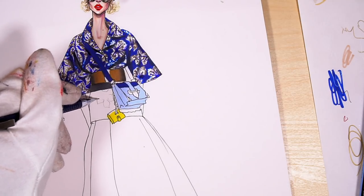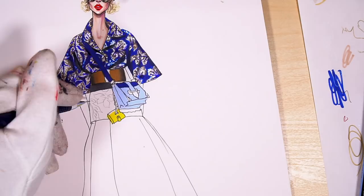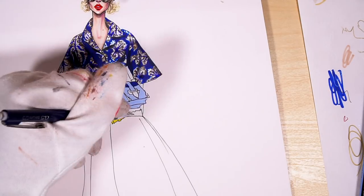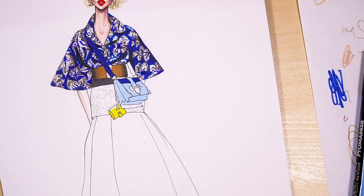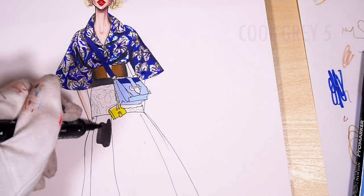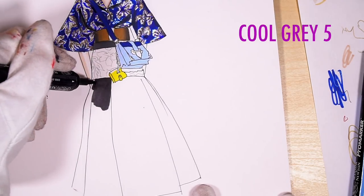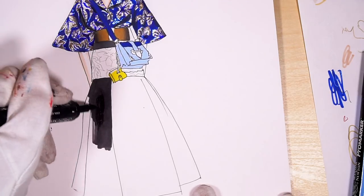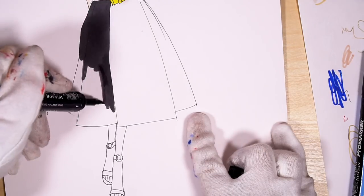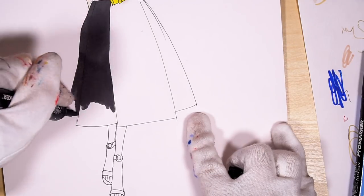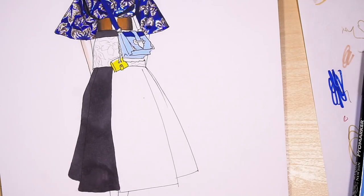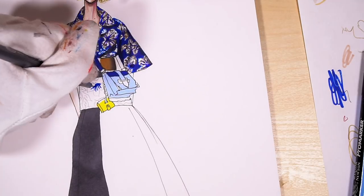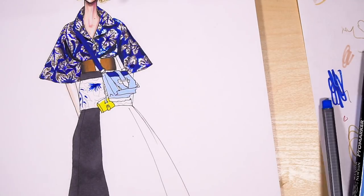I'm coloring the lower half of her jacket just in the same way as I worked with the upper part. Skin tone for her arms. One half of her skirt is going to be black. So as a base I'm using cool gray 5 and just coloring it. For now that's enough, let's leave it to dry.